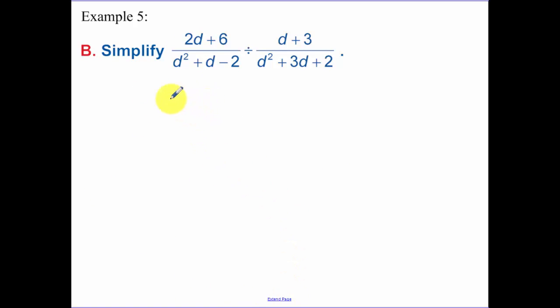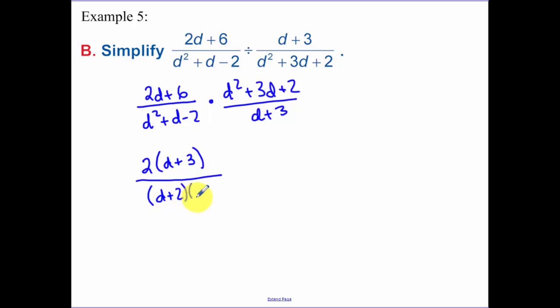Okay, this example is just like the other example we did. We have to keep the first fraction the same, change the sign to multiplication, flip the second fraction. So now the first fractions factor, so factor everything. I'm going to have to have a d plus a 2 and a d minus a 1. I have a d plus 2, a d plus a 1.